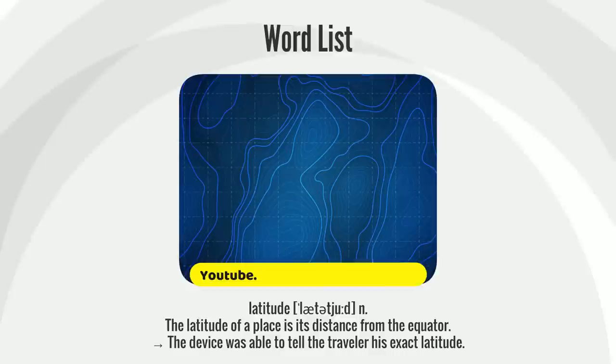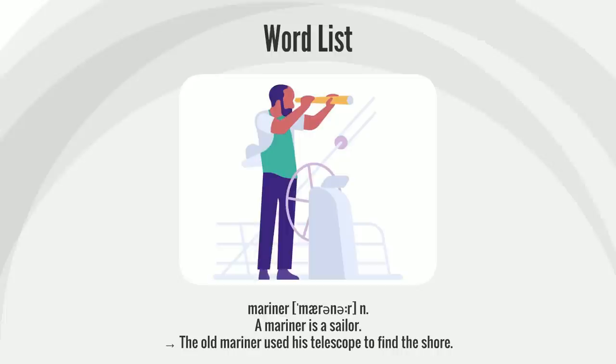The latitude of a place is its distance from the equator. The device was able to tell the traveler his exact latitude.